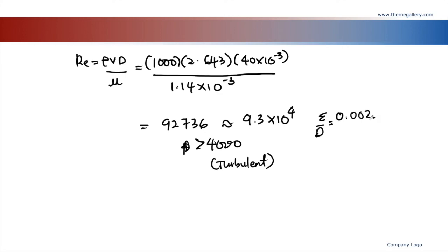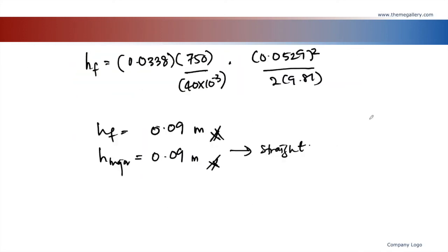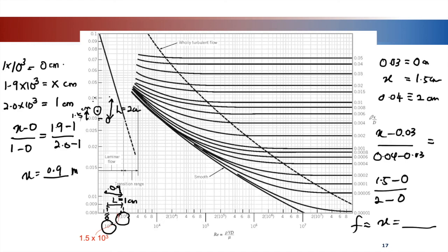The relative roughness is 0.002. On Moody's chart, each line represents a different epsilon over D. We locate the line for epsilon over D equals 0.002. Find the intersection of the vertical line at Re equals 9.3 times 10⁴ with the epsilon over D equals 0.002 curve.